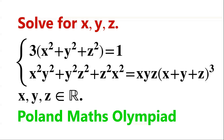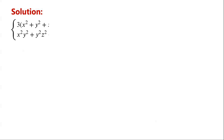Solve the system of equations where x, y, and z are real numbers. There are three variables and just two equations. How to solve this system of equations? At a first glance, solving this system of equations seems not easy.